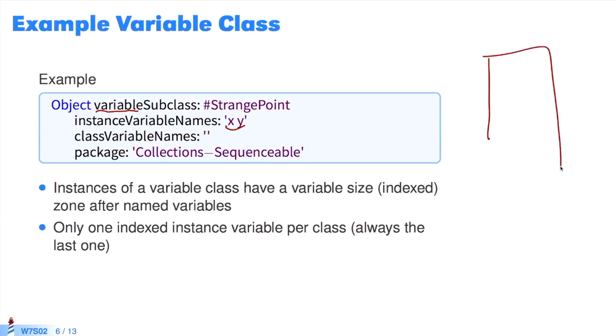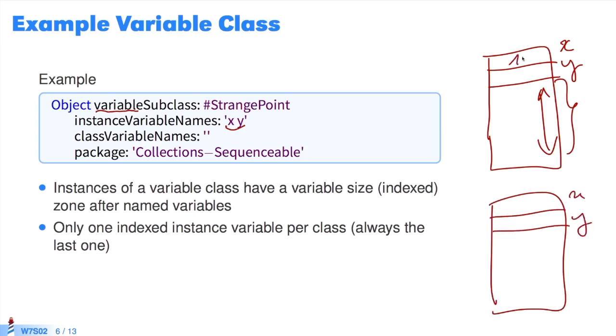This creates objects that look like this, with a value for x, a value for y, and one variable zone per instance. We could also have another instance, which also has x and y, with 10 here and 20 here, and for example, 100 here and 200 here, with a variable zone that can contain different objects.